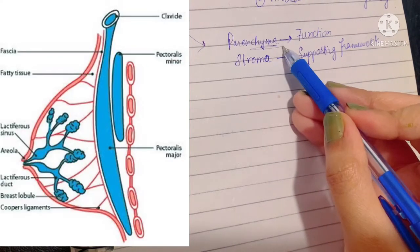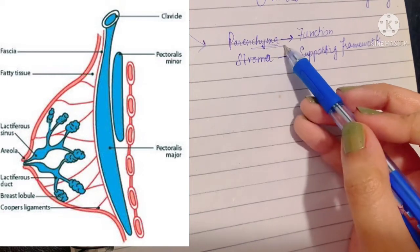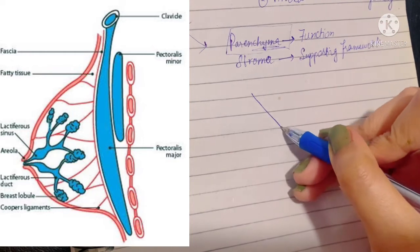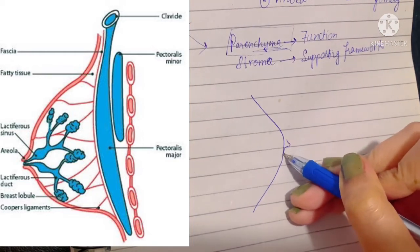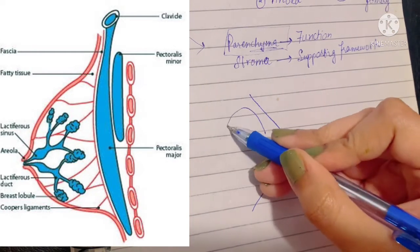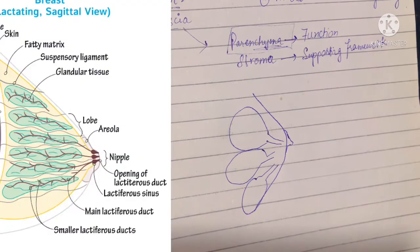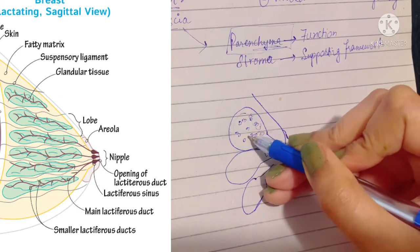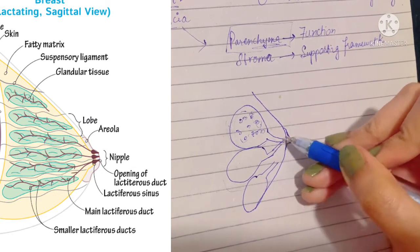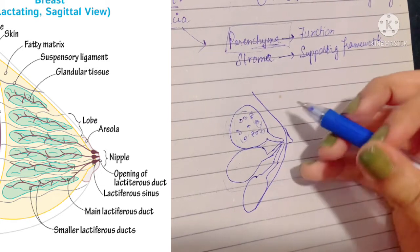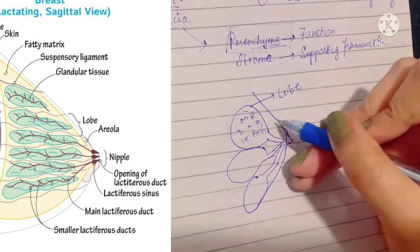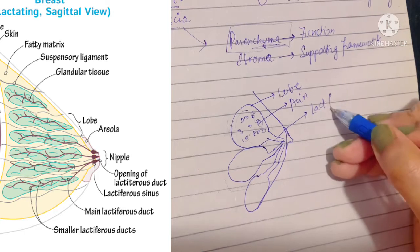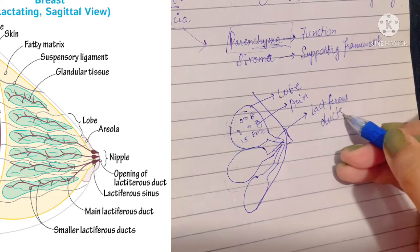The main function of the breast is to produce milk, so the parenchyma of the breast consists of glands that produce milk. The breast parenchyma consists of multiple lobes, almost balloon-shaped. Each lobe is a group of acini — multiple acini form a lobe — and each lobe is drained by ducts called the lactiferous ducts.